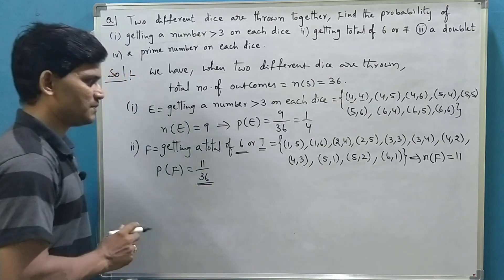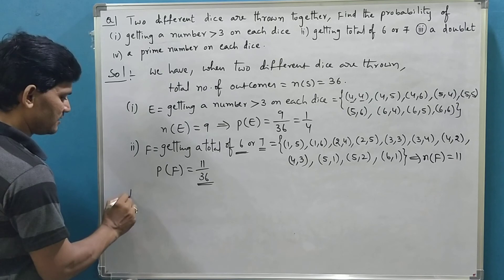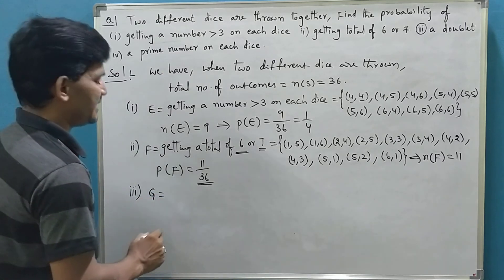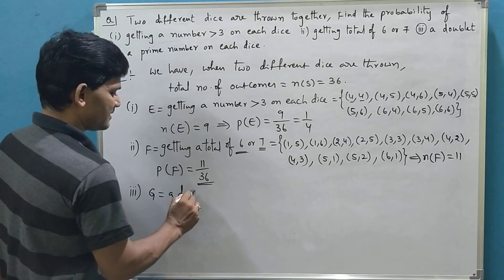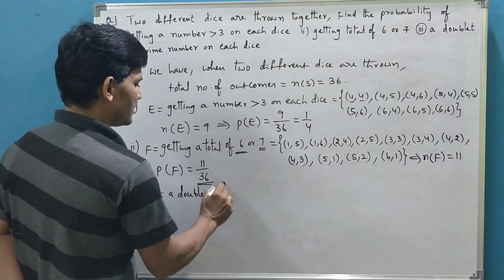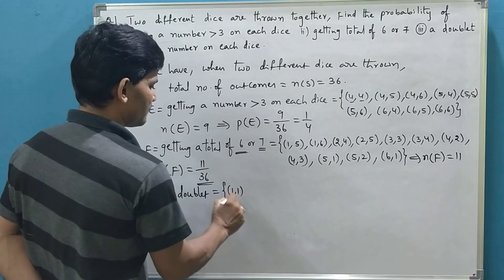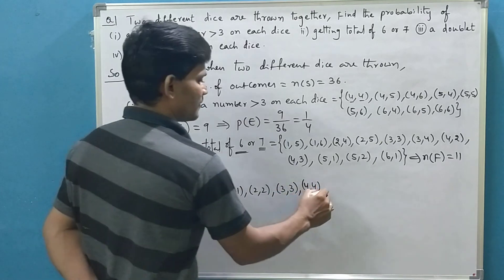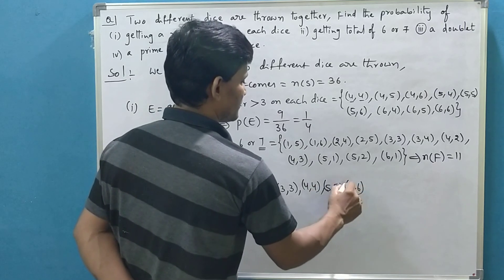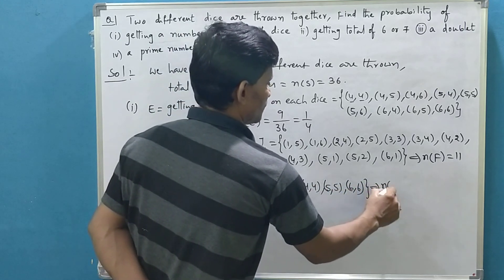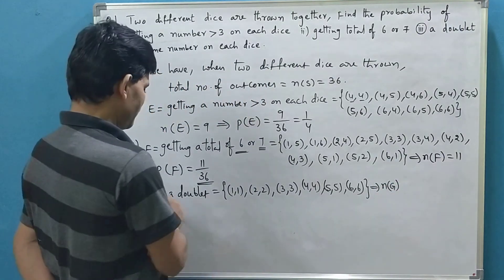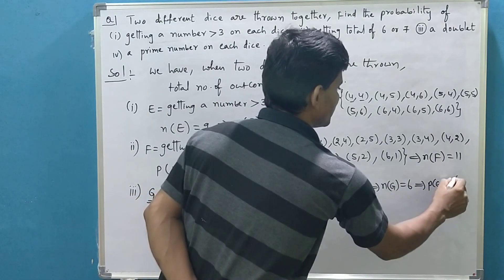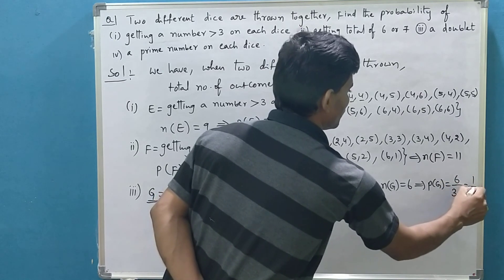No cancellation is possible, so P(F) = 11/36. Now let us see the third event. Let the event be G — a doublet. A doublet means getting the same number on both dice. The favorable outcomes are: (1,1), (2,2), (3,3), (4,4), (5,5), (6,6). Total favorable outcomes are 6. So the probability is 6 by 36, which equals 1 by 6.